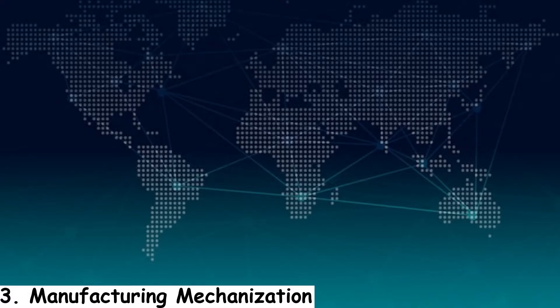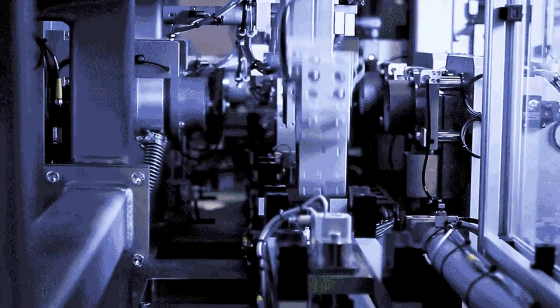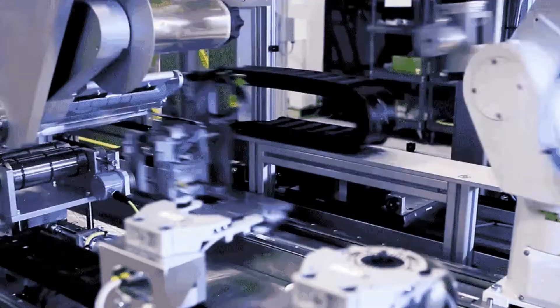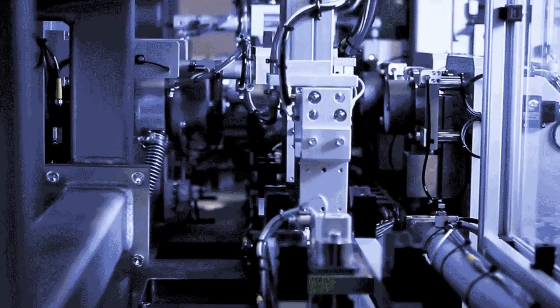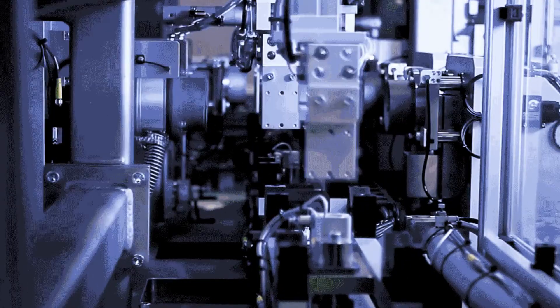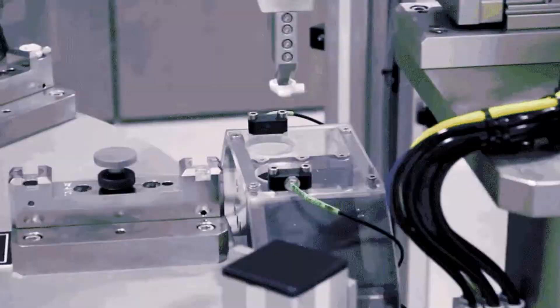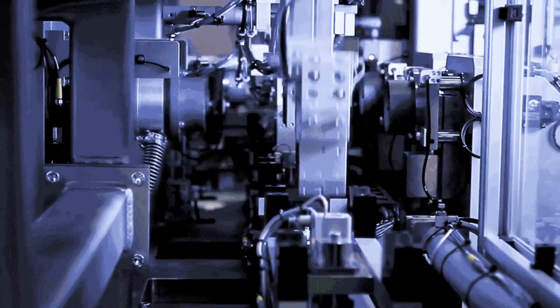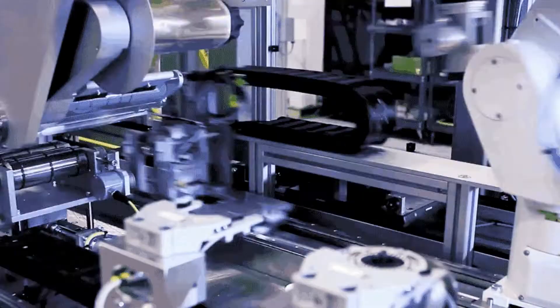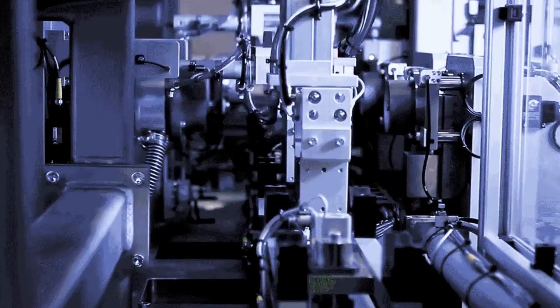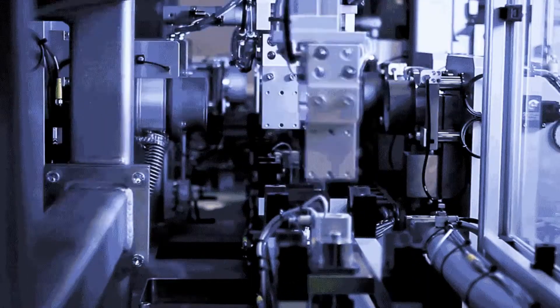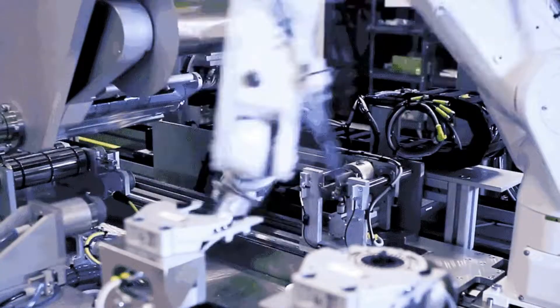Number 3: manufacturing mechanization. While it may not be the first thing that comes to mind when considering examples of technological globalization, this is one factor that has a significant impact on our lives. Using machines to manufacture reduces labor costs, which has two competing effects: lower labor costs leading to cheaper goods, and job loss in traditional manufacturing.